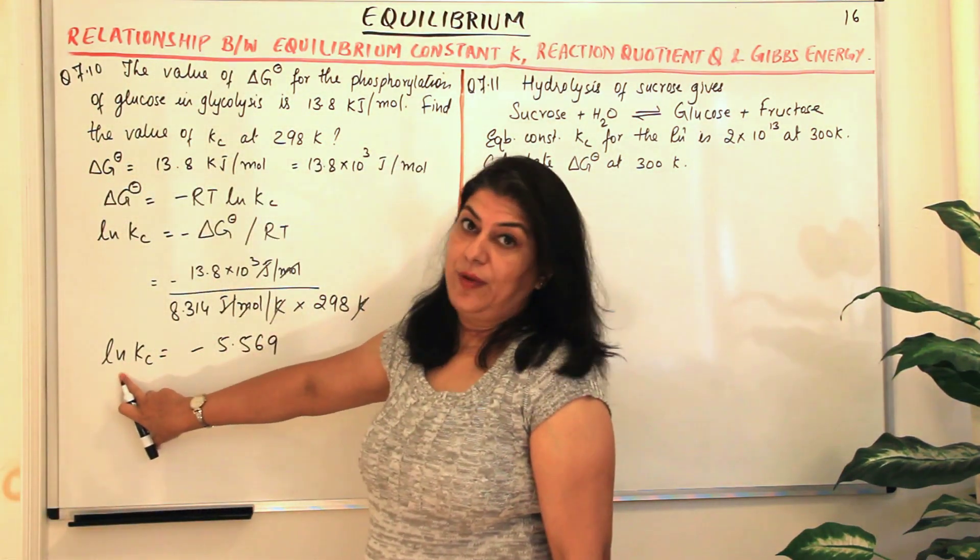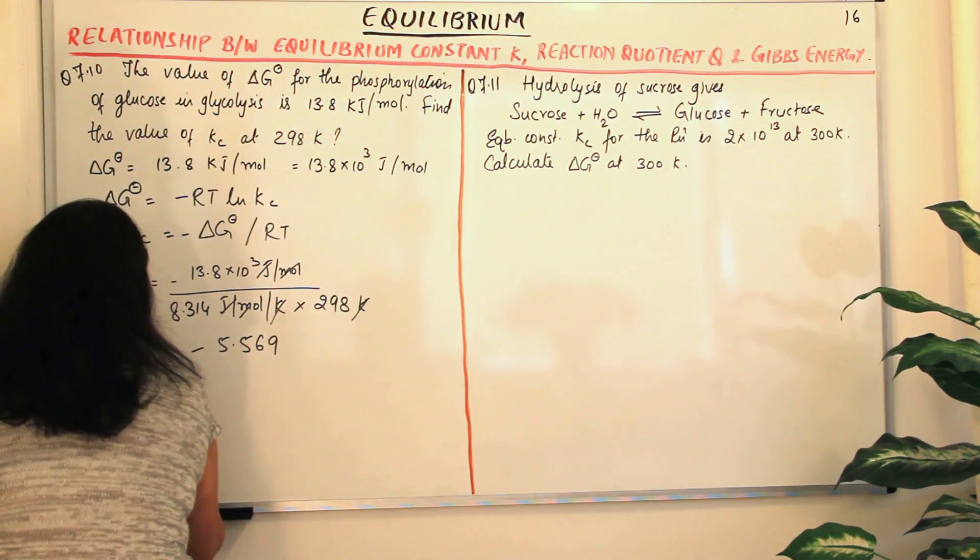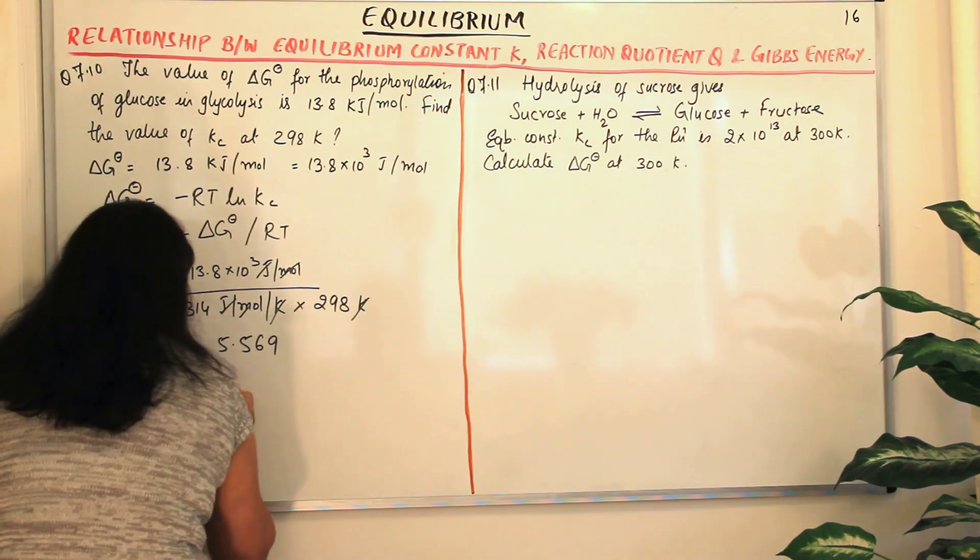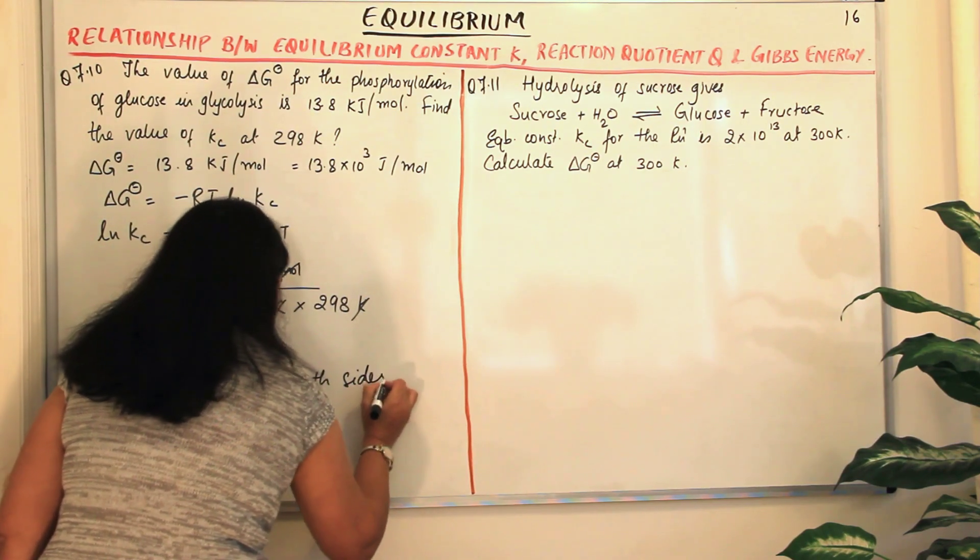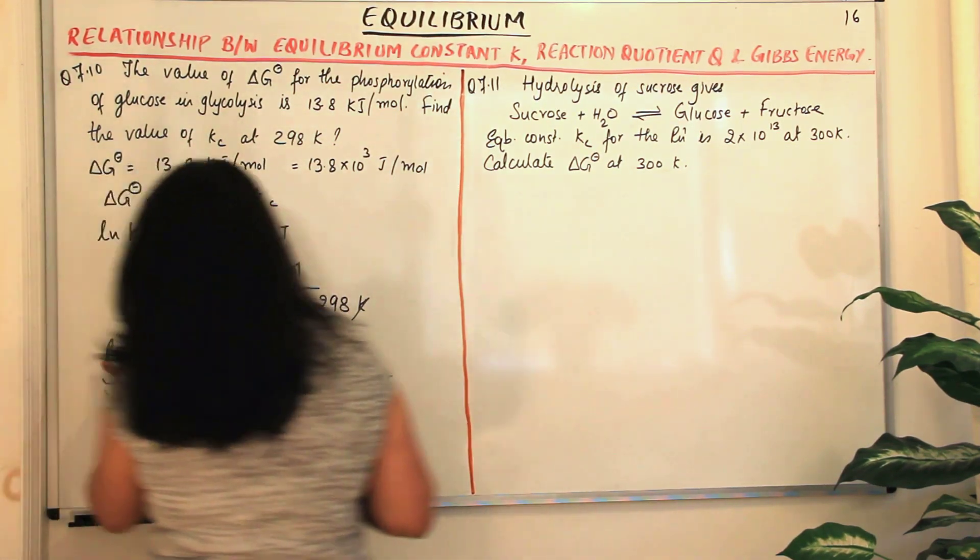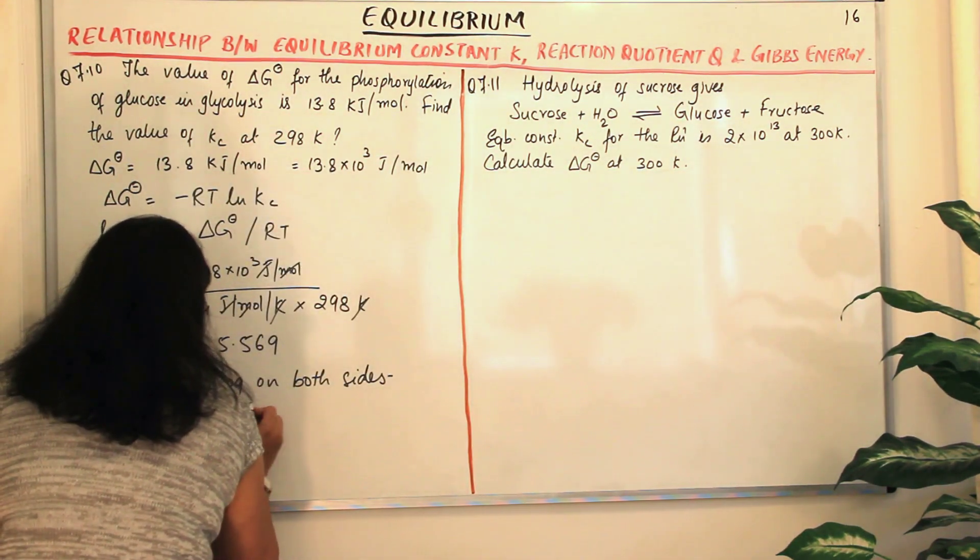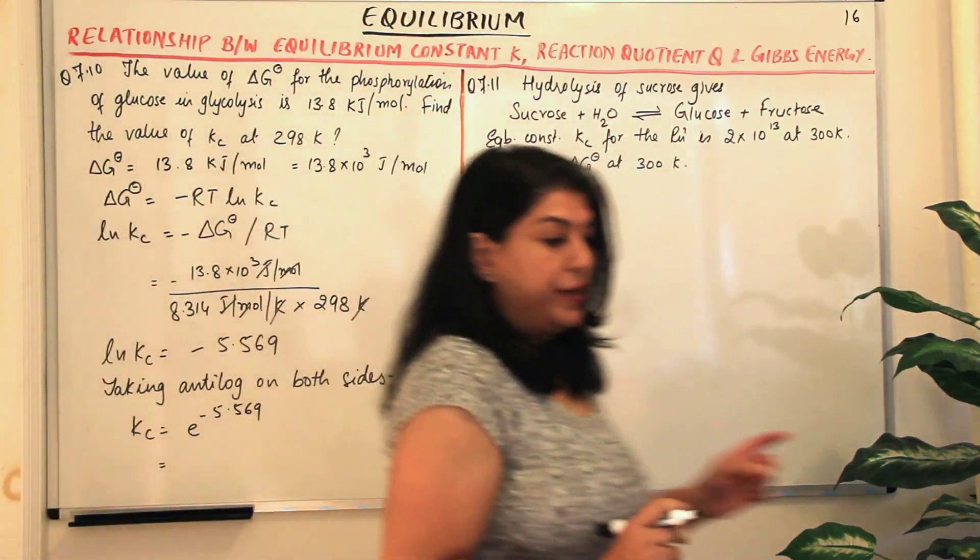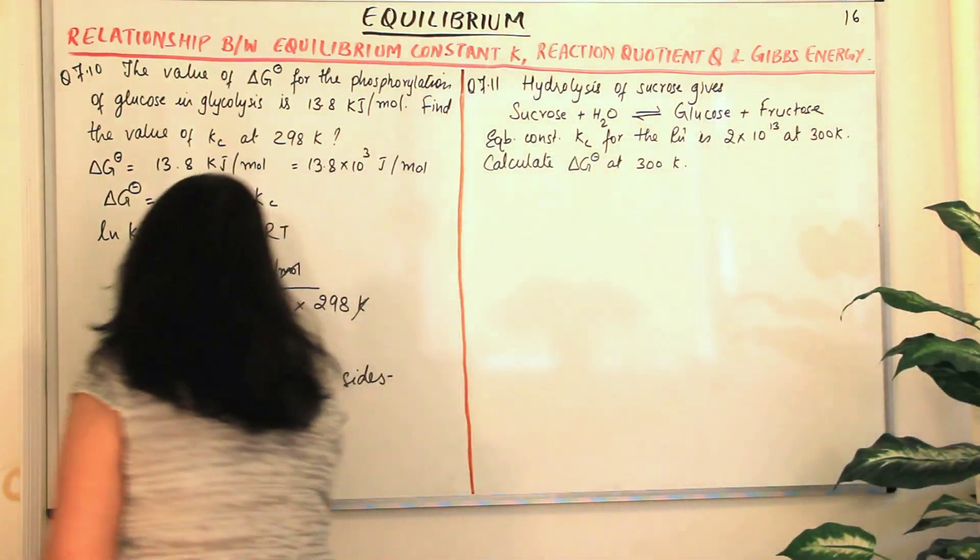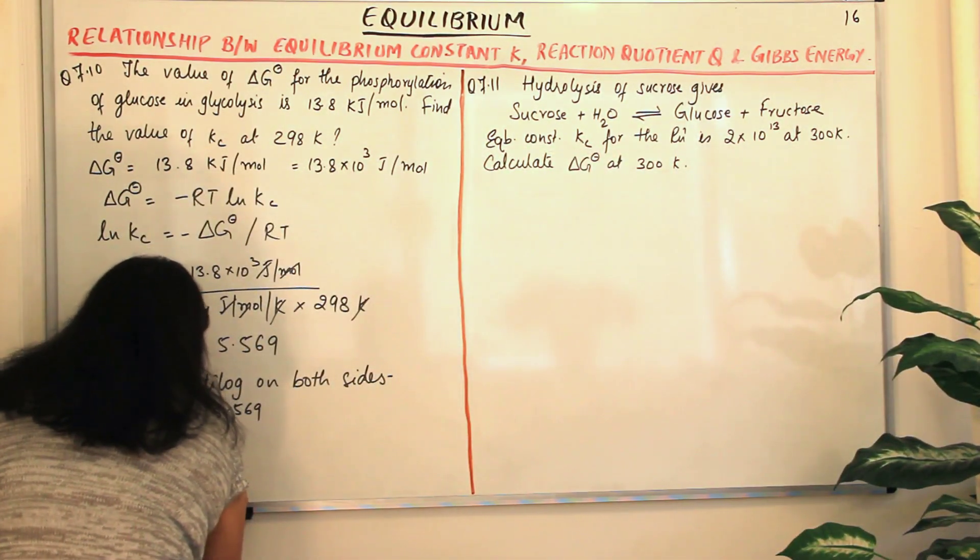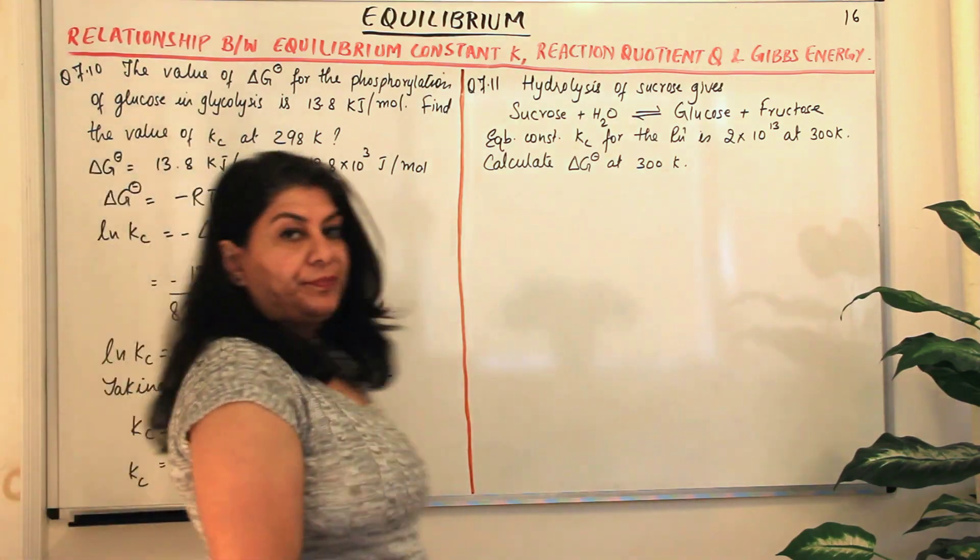In order to remove this value of ln, we take the antilog. Taking antilog on both sides, we get Kc. Antilog of ln Kc would be Kc, equal to e to the power of minus 5.569. And when you solve this, it comes out to be equal to 3.81 into 10 to the power minus 3.